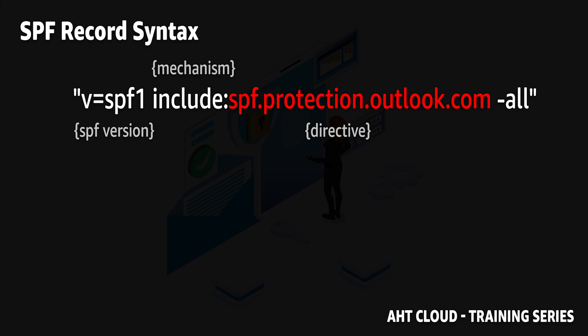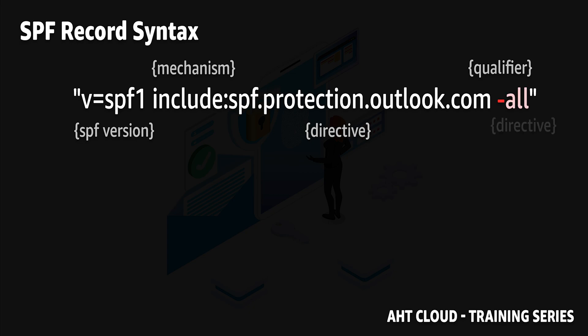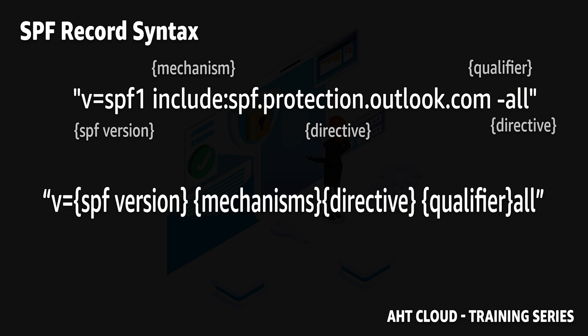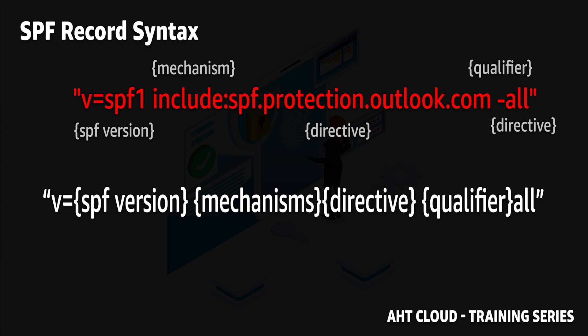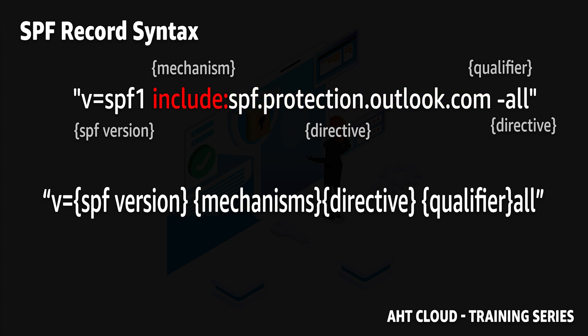The last part also consists of two parts known as the qualifier and the directive. Putting this all together, this record is basically saying that spf.protection.outlook.com is a third-party email vendor and we authorize that vendor to send emails on our domain's behalf. The include part copies the SPF record stored inside that URL, and the last part says all other emails not in our list should fail.